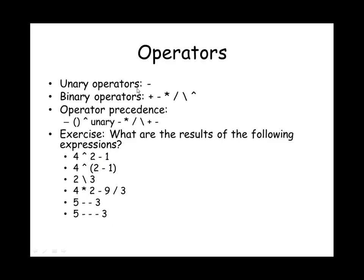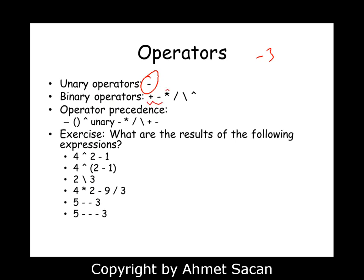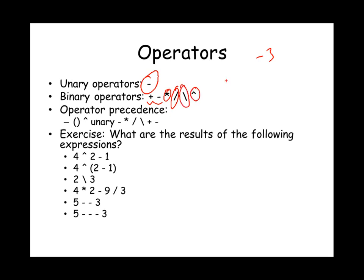When operating with numbers and variables, there are several mathematical operators available. The unary operator negates the number following it, so minus three is negative three. Binary operators are addition, subtraction, multiplication, division, backward division, and the power symbol. Four divided by two gives you two, whereas four backslash two is actually two over four, giving 0.5. The power symbol lets you take powers: three to the power two gives nine.